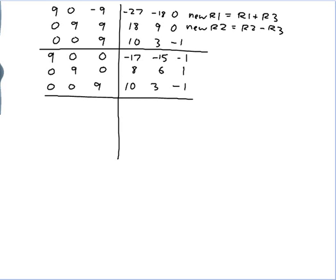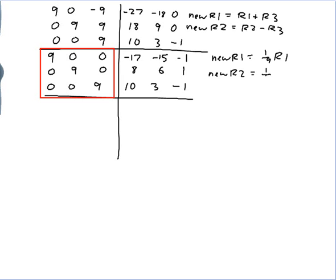Now all I need to do is produce an identity matrix here, by dividing everything by 9. My new row 1 is one ninth of row 1, my new row 2 is one ninth of row 2, and my new row 3 is one ninth of row 3. So that gives: 1, 0, 0 for the left part of row 1.